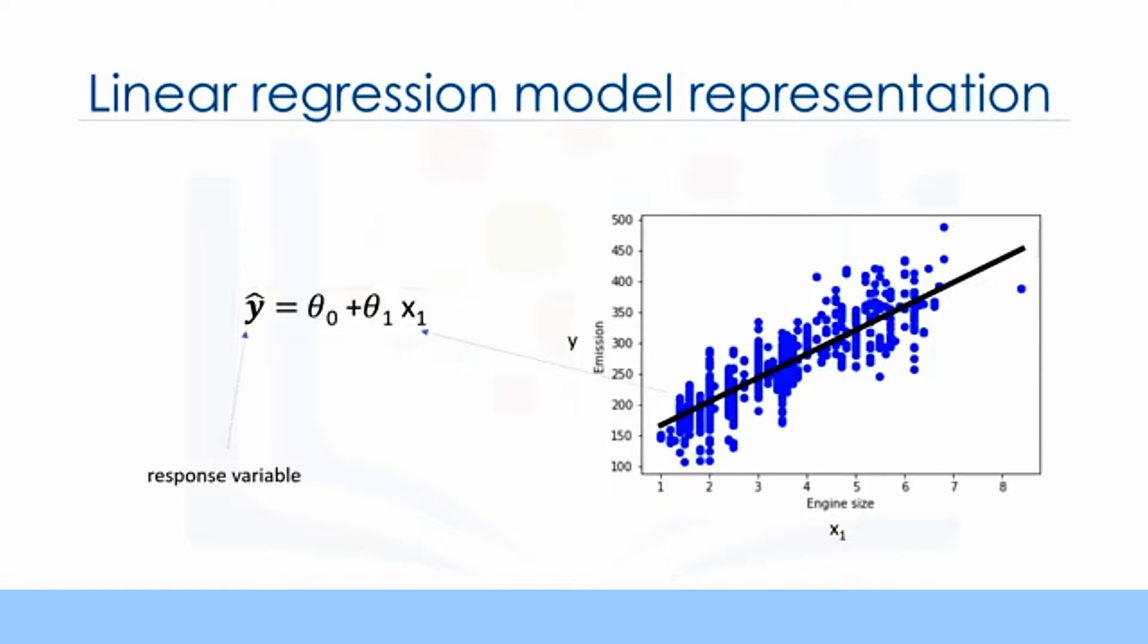In this equation, y hat is the dependent variable or the predicted value, and x1 is the independent variable. Theta 0 and theta 1 are the parameters of the line that we must adjust. Theta 1 is known as the slope or gradient of the fitting line, and theta 0 is known as the intercept. Theta 0 and theta 1 are also called the coefficients of the linear equation. You can interpret this equation as y hat being a function of x1 or y hat being dependent of x1.